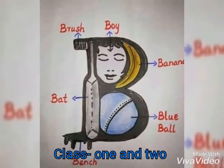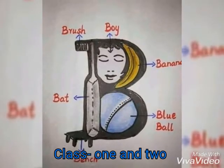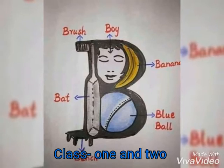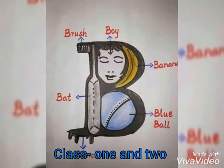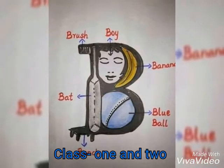B for boy, boy means ballok. B for bat, bat means bat.